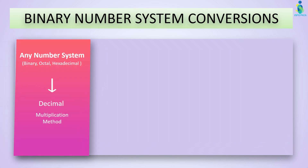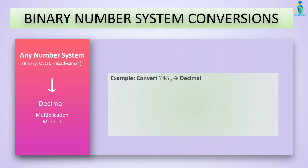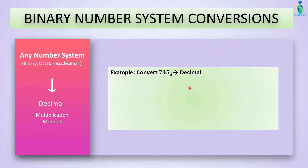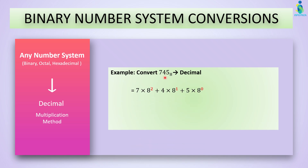Now let's convert from octal to decimal. To convert to decimal, we multiply each digit by the base of octal raised to its positional power: 7×8² + 4×8¹ + 5×8⁰. Write down the positional values from the right side and solve.